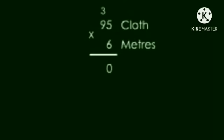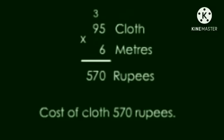Starting from the units place. 6 into 5 is equal to 30. 0 units and 3 tens. 6 into 9 is equal to 54. 4 plus 3, 57. So, the answer is 570 rupees. Cost of cloth 570 rupees.